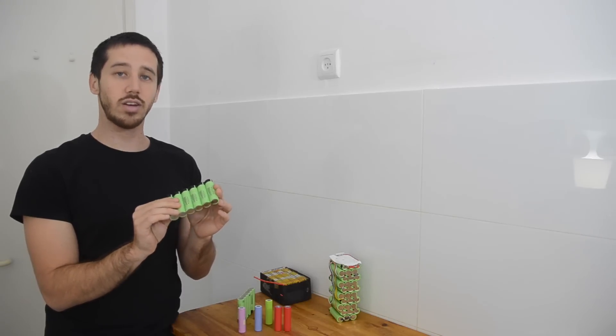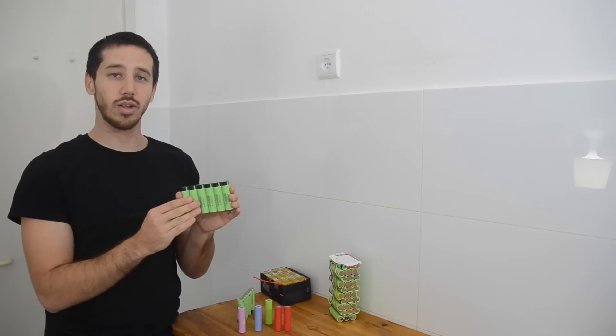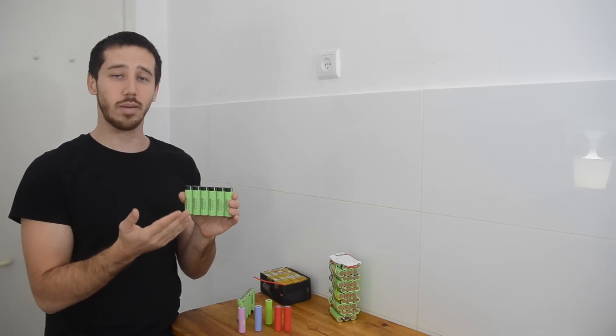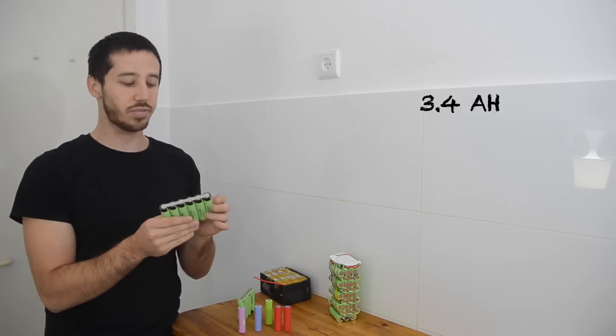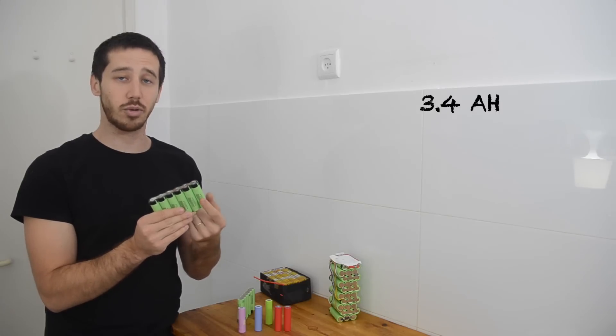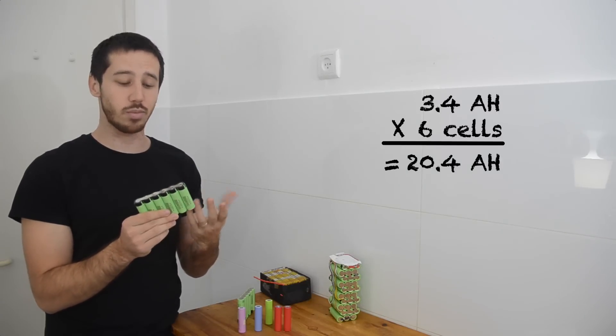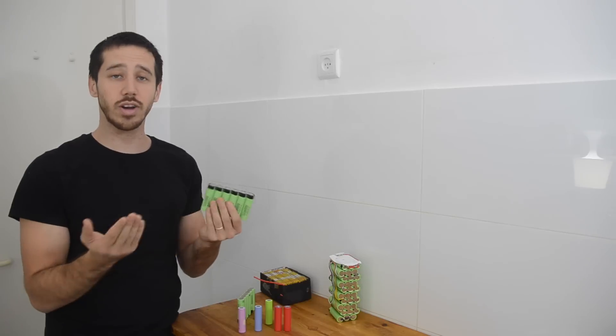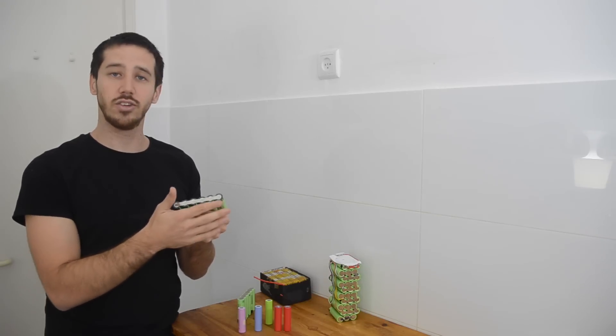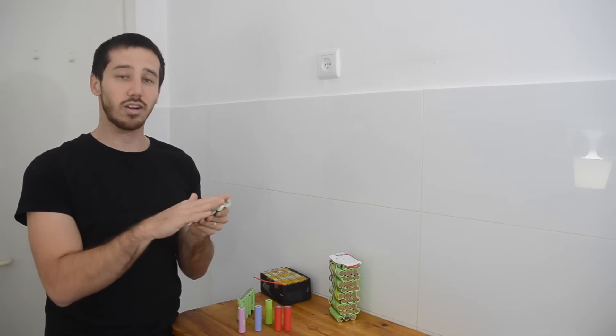So while I have six cells here where each of these are 3.4 amp hours, I've actually created basically one big cell which is a 20.4 amp hour cell. You take the 3.4 amp hours of each cell and you multiply it by six cells to get 20.4. And that's how we've created this simple parallel connection, just connecting all the positive ends and all the negative ends.